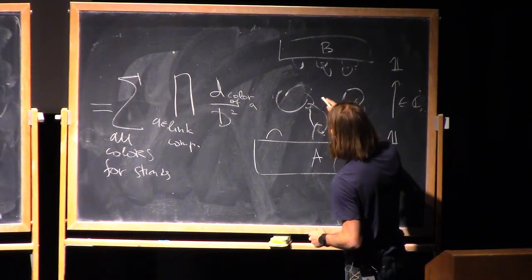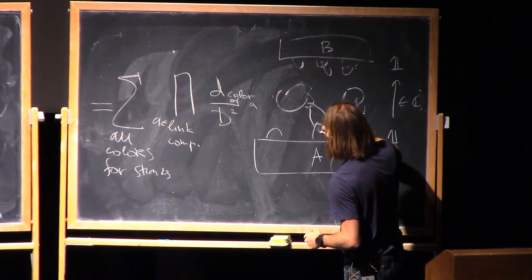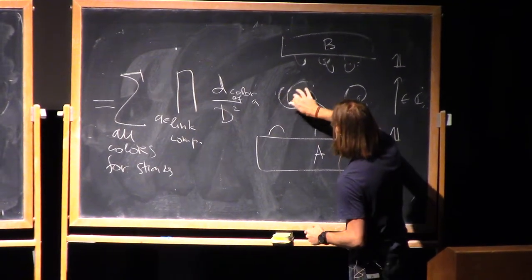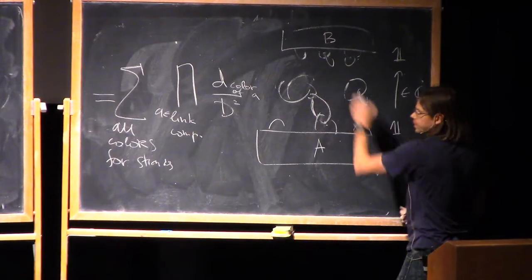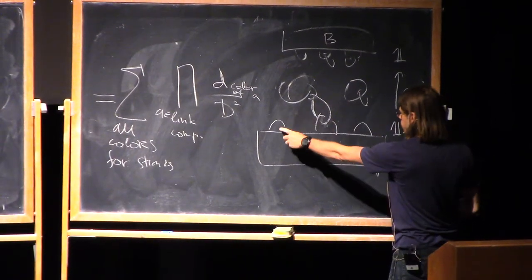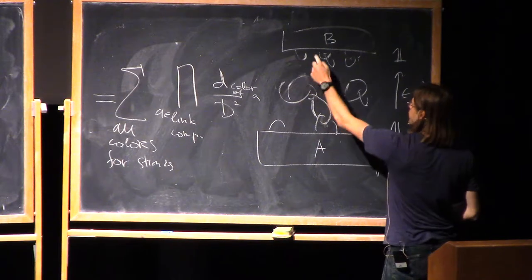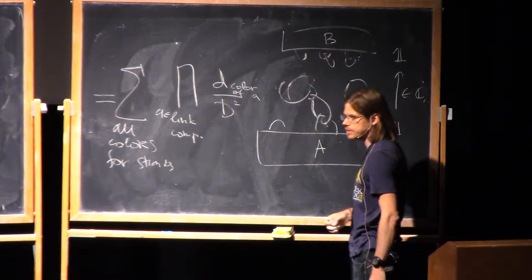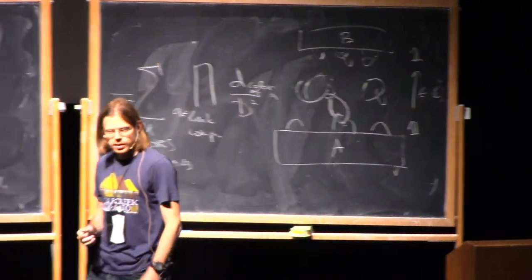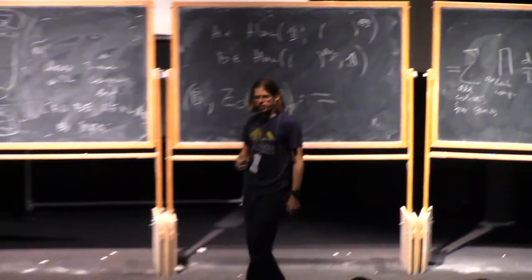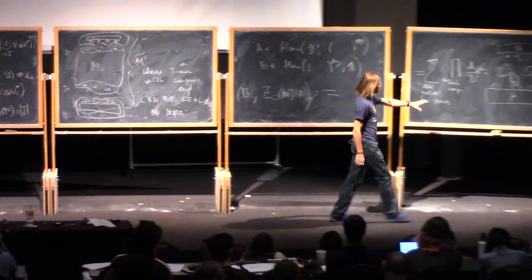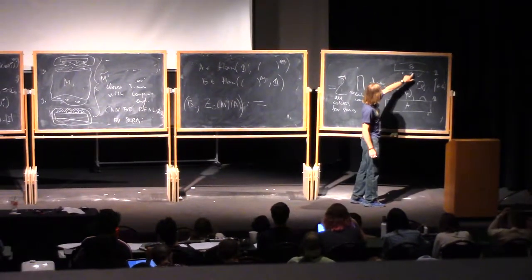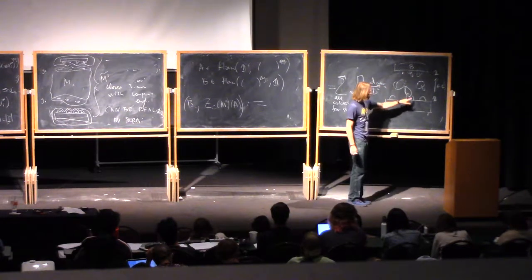So for each of this, I do a surgery on each link component here, not including the arcs connected to coupons. So arcs connected to coupons, they will be just embedded in the resulting three manifolds. So on all other things I do, I do a dent surgery according to the framing, and these guys will just end up embedded.